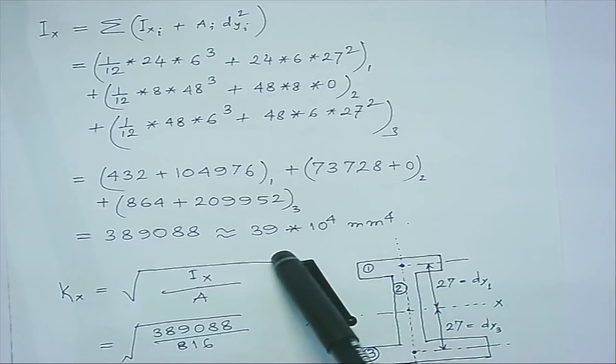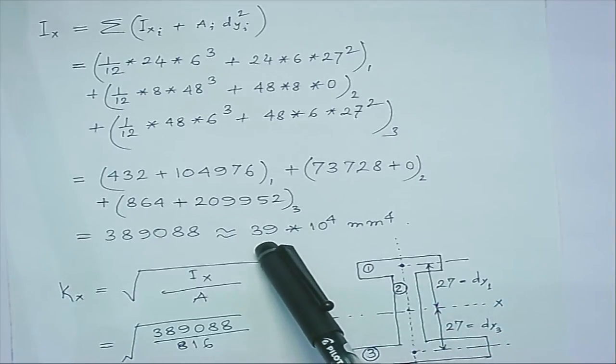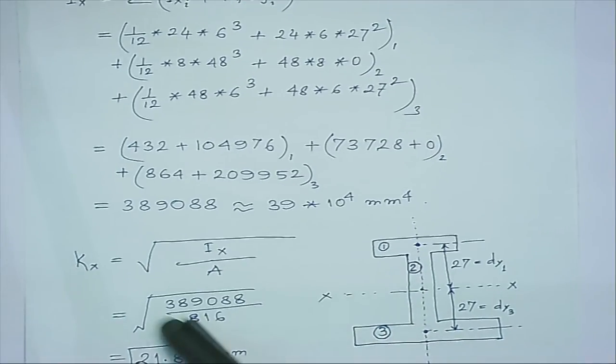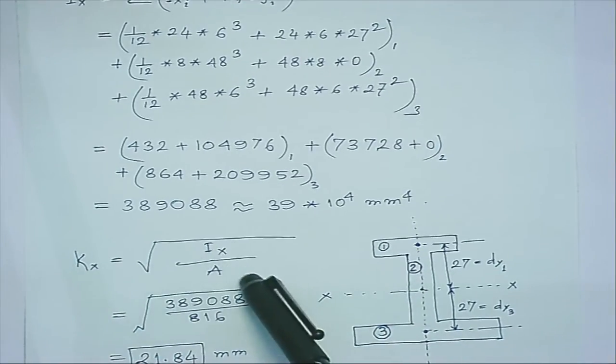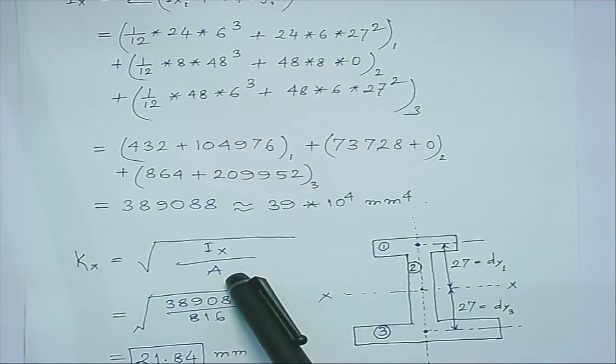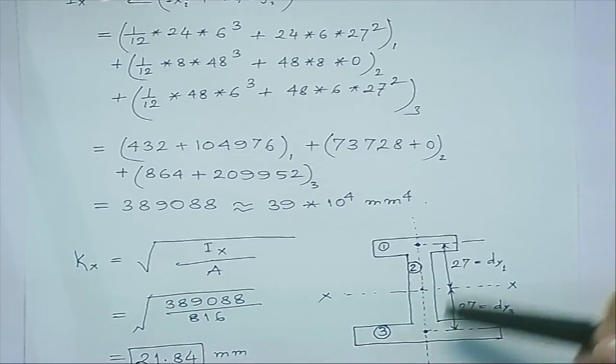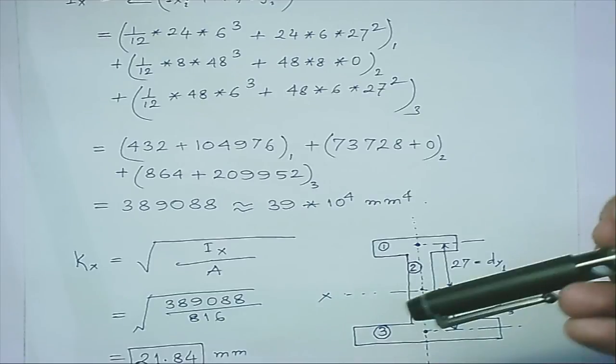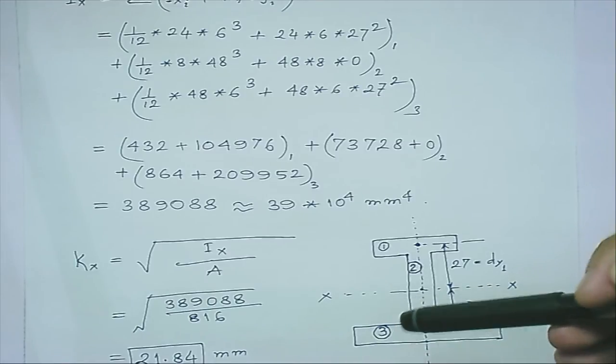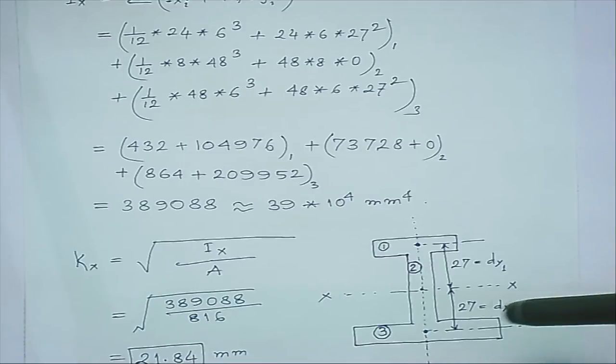kx will be simply the square root of Ix by A. Physically, if you look at it, think of a beam stretched along the z-direction. If I try to rotate this about the x-axis, it will have more resistance about the x-axis because you can always show that kx is greater than ky if you calculate ky.